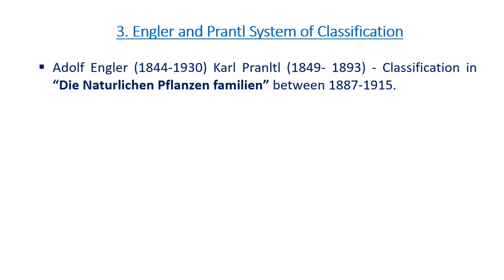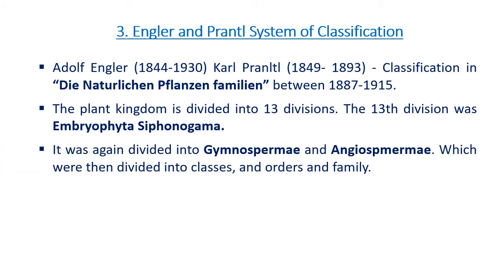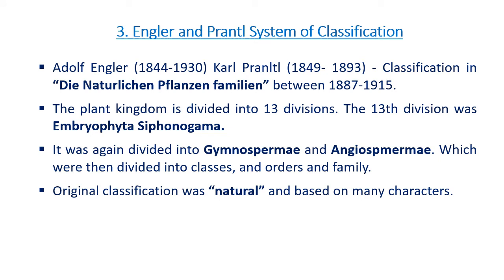Adolf Engler and Karl Prantl proposed a system of classification in their classical work titled Die Natürlichen Pflanzenfamilien. The plant kingdom is divided into 13 divisions, and the 13th division was called Embryophyta Siphonogama. It was divided into gymnosperms and angiosperms, which were then divided into classes, classes into orders, and orders into families. The original classification was natural and based on many characters.